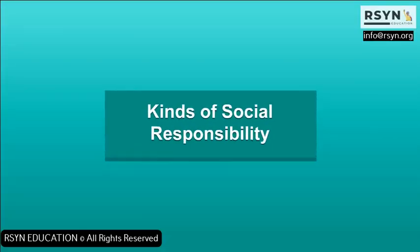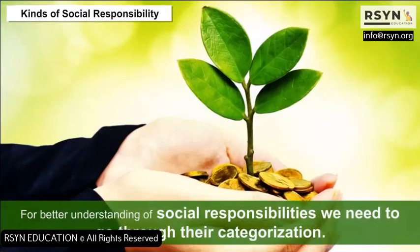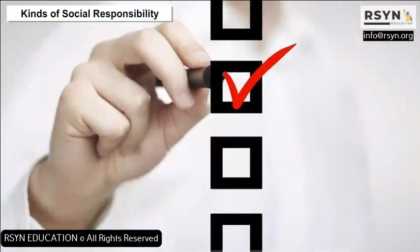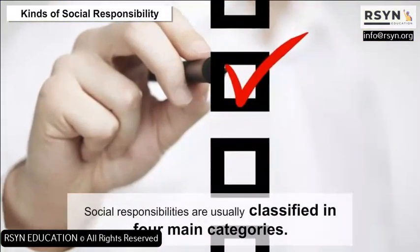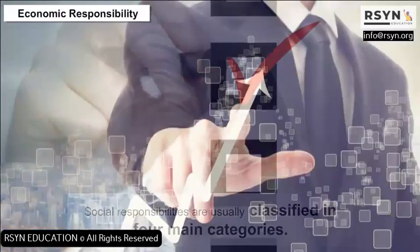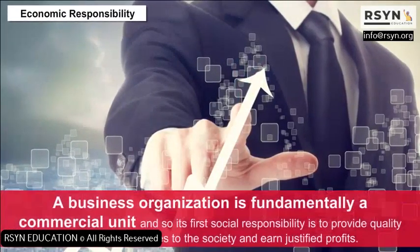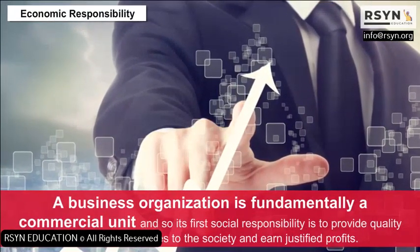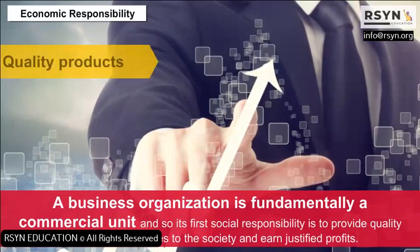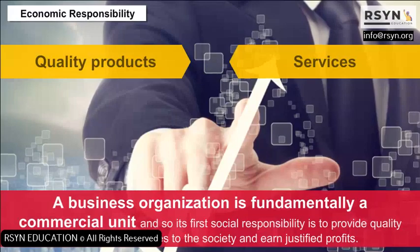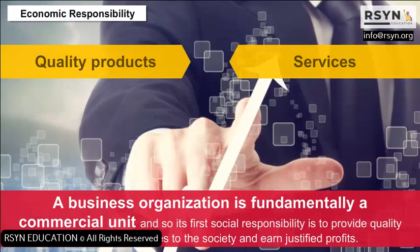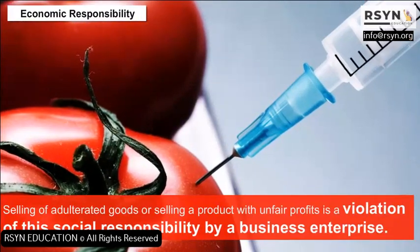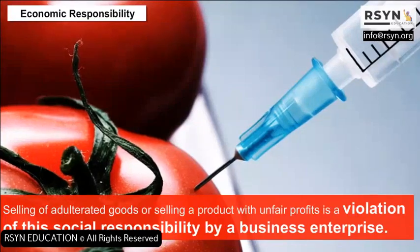Kinds of social responsibility: For better understanding of social responsibilities, we need to go through their categorization. Social responsibilities are usually classified in four main categories. Economic responsibility: A business organization is fundamentally a commercial unit, and so its first social responsibility is to provide quality products and services to the society and earn justified profits. Selling adulterated goods or selling a product with unfair profits is a violation of this social responsibility.